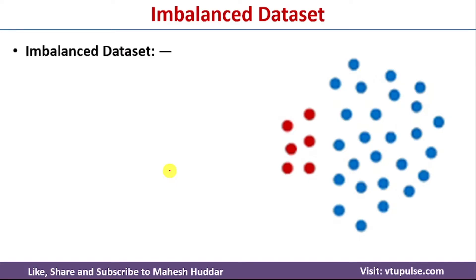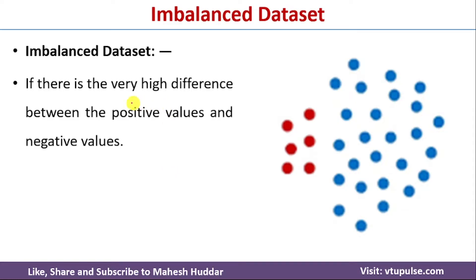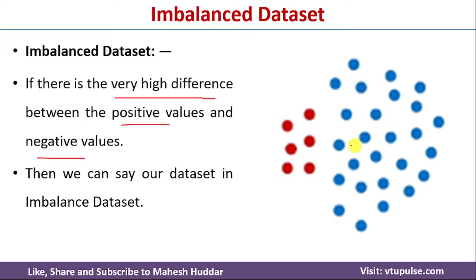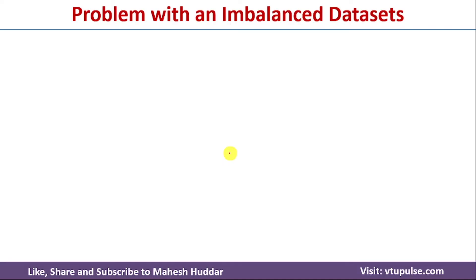A dataset is called an imbalanced dataset if there is a very high difference between the classes. For example, if you have positive and negative classes and there is a very high difference between the number of examples in each class, that is an imbalanced dataset. In this example, the blue class has a very high number of examples compared to the red class.